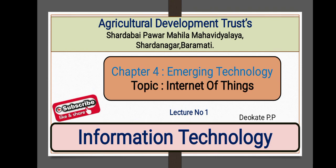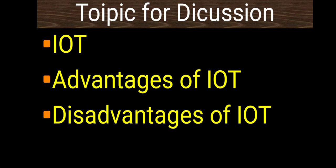Hello students, welcome to another lecture on IT. In today's session we are going to start a new chapter which is Emerging Technology. We are going to discuss lots of concepts related to Internet of Things. Topics for today's discussion: first, what is IoT; second, advantages of IoT; and third, disadvantages of IoT.